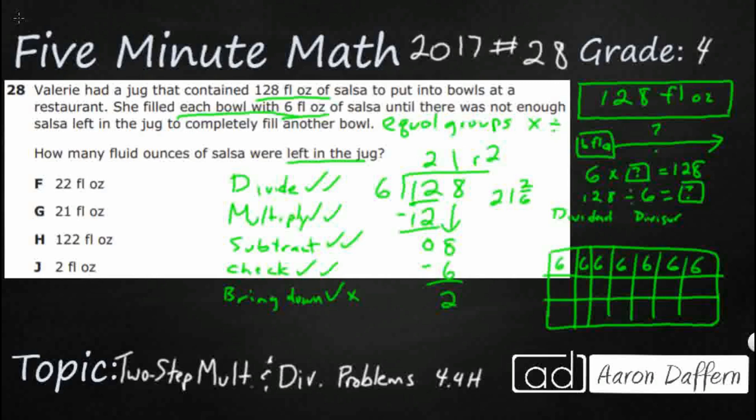So you see, I've got a row of seven. I've got another row of seven. I've got another row of seven. So these are my 21 bowls that I can fill in and that gets me 126 ounces, but I've got these two ounces left over. I can't quite get another full bowl out of those two ounces. And that's the answer we're looking for is J, two ounces.